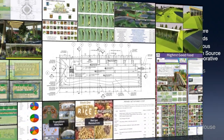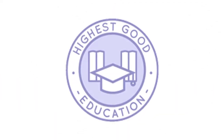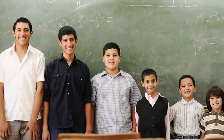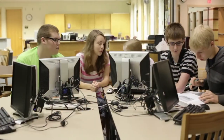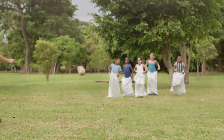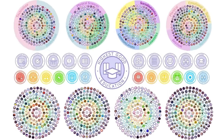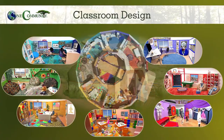The next component is highest good education. This component is complete and pretty much ready to launch once we're on the project. One Community's approach to highest good education is designed for all age groups, adaptable to any schooling environment, inspiring and fun for all participants, and includes national standards, all subjects, lesson plans, teaching strategies, learning strategies and tools, classroom design, and more.